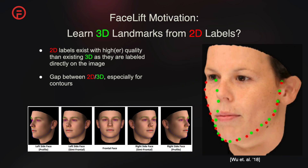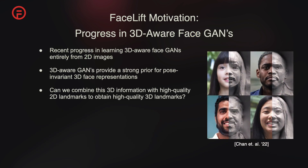Given the high quality of 2D labels, which are directly annotated on images without needing to infer occluded areas, we explore the potential of learning 3D landmarks from these 2D labels. However, there is a gap between 2D and 3D projected labels, as shown in the red vs. green labels to the right. Recent advancements in 3D-aware face scans like EG3D and IDE3D offer a robust foundation for pose-invariant 3D facial representations, setting the stage for our proposed method. We seek to combine this 3D information with high-quality 2D landmarks to obtain high-quality 3D landmarks.